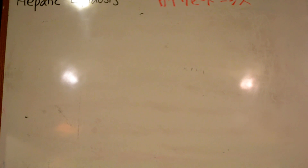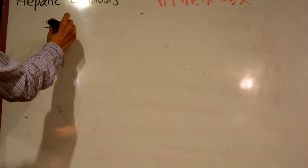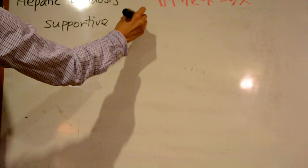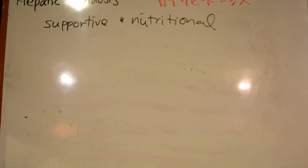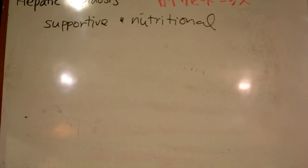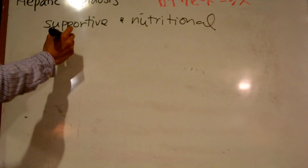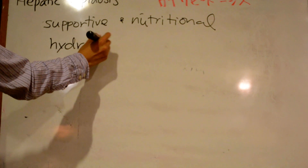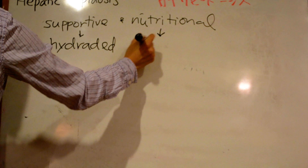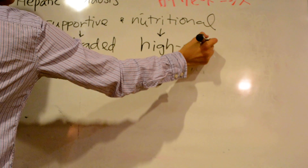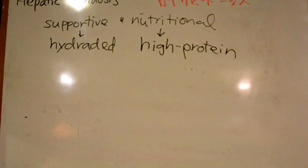The therapy for primary hepatic lipidosis is supportive care and appropriate nutritional support. The patient should be hydrated and a feeding tube is placed for the administration of a high quality, high protein, calorie dense, balanced diet until the cat is interested in eating again.